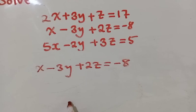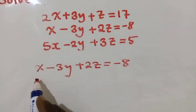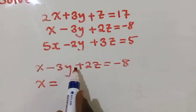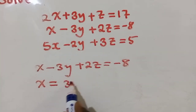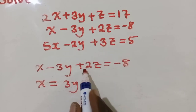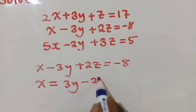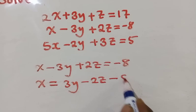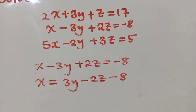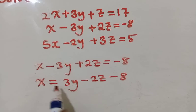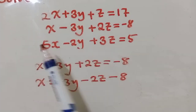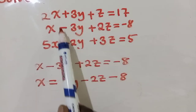The next thing will be to make x the subject of the formula. So when we make x the subject of the formula, the 3 will cross the equal sign — it will be positive 3y — and positive 2z will become negative 2z, and here minus 8. So since we have this expression, we now take it and replace it in one of the equations.